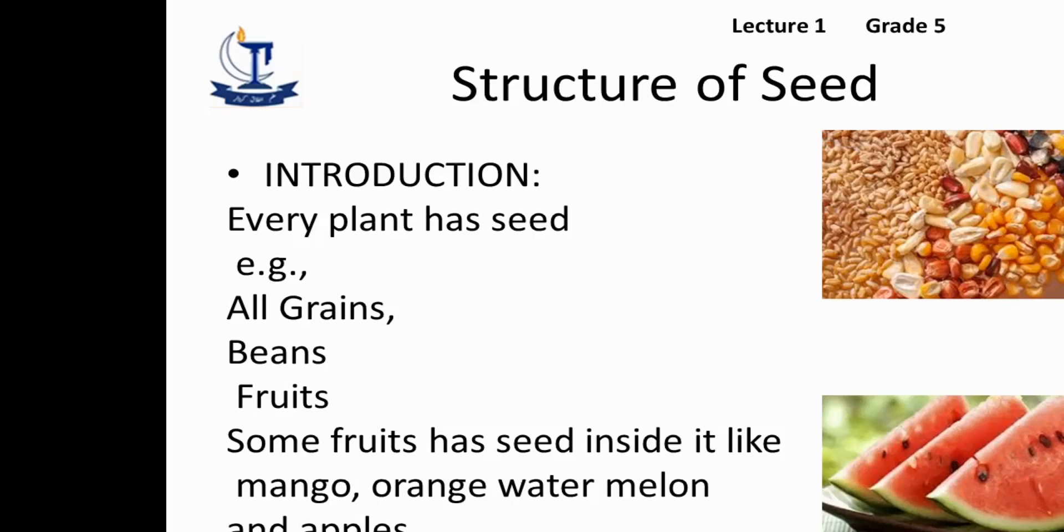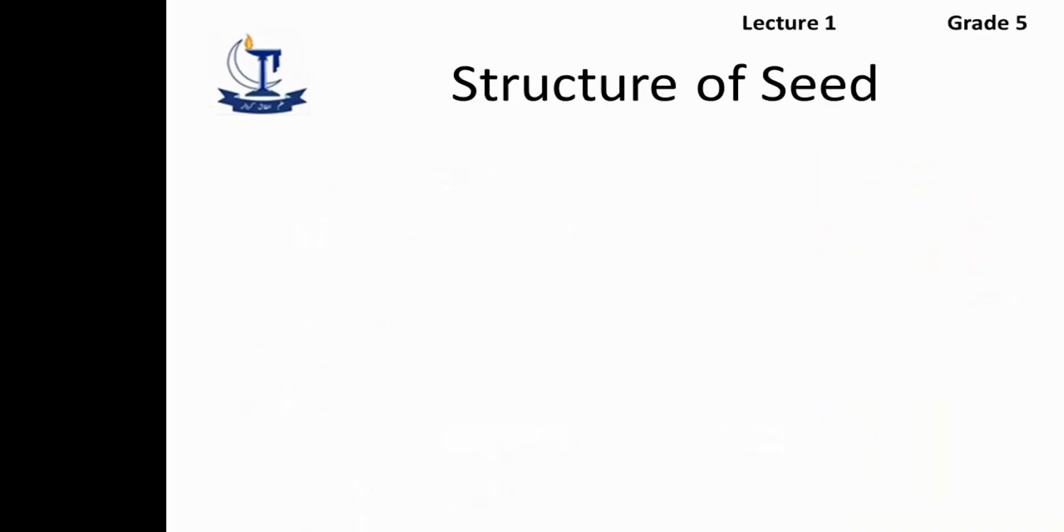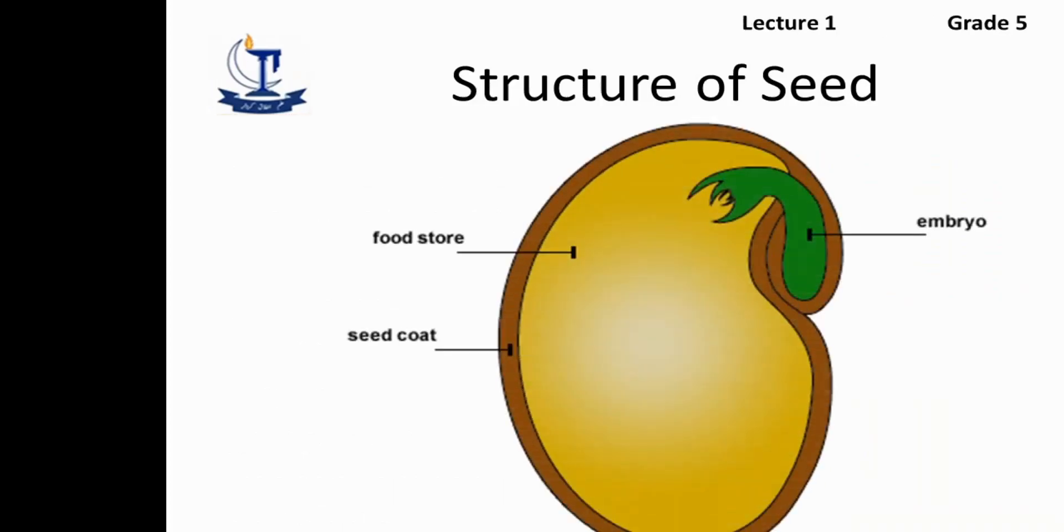These seeds are also used as food which we eat in our daily life. Now we study about the structure of the seed. The seed has three important parts: the first one is seed coat, the second one is food store, and the third one is embryo. These are the main parts of the seed.